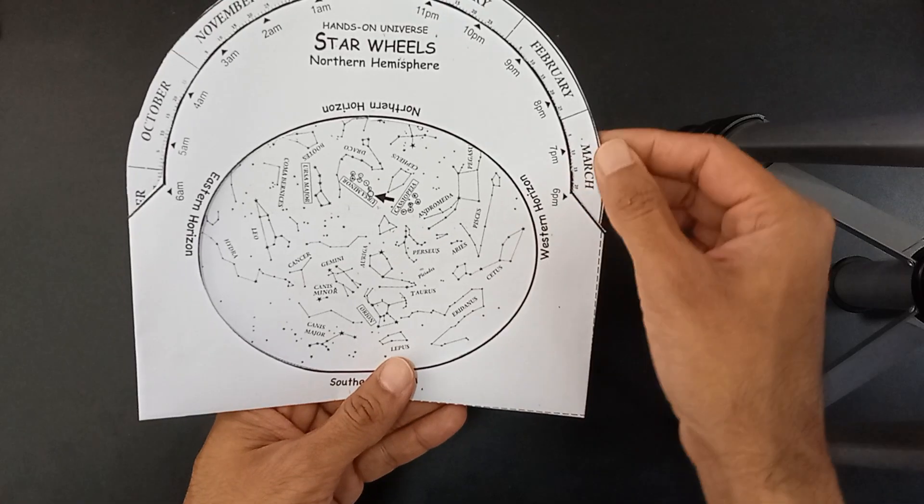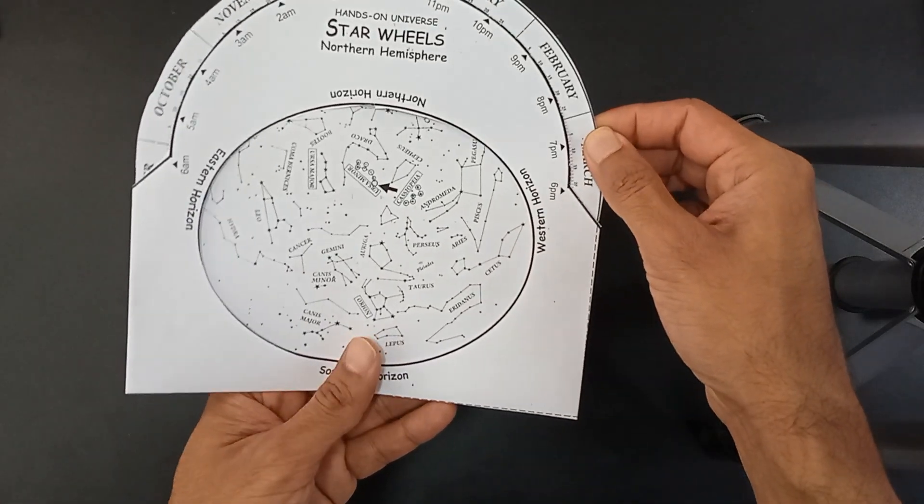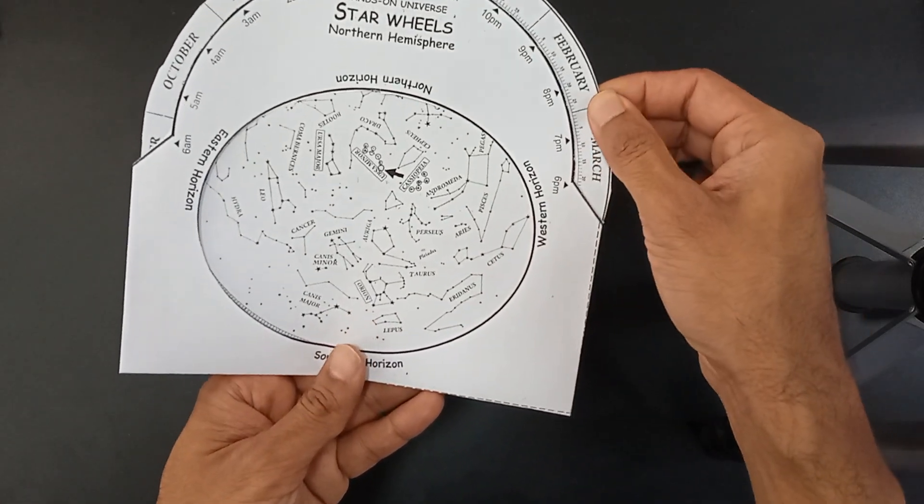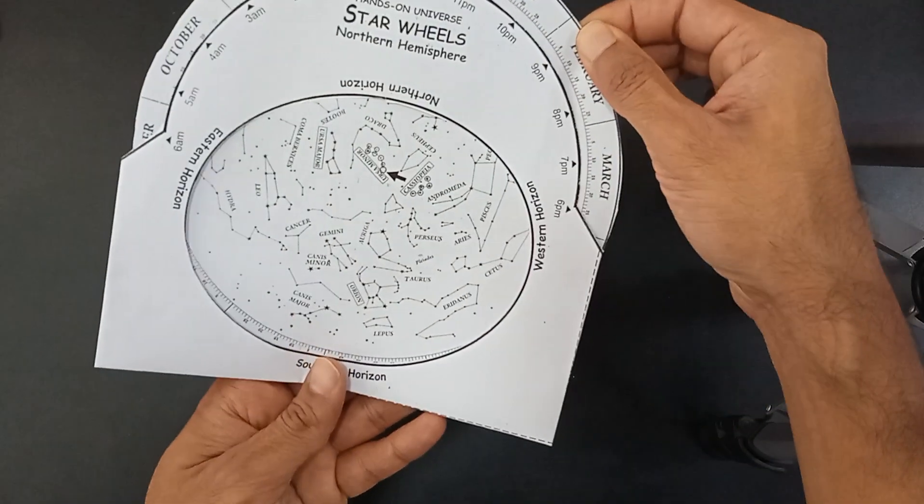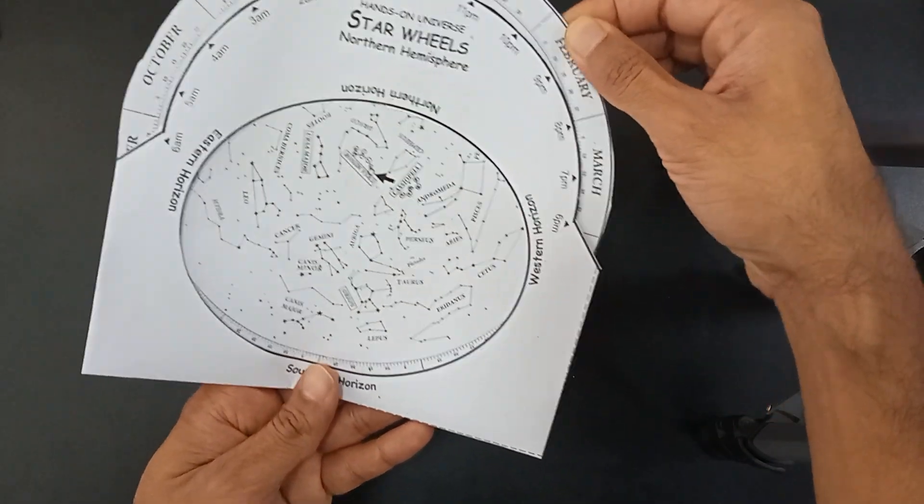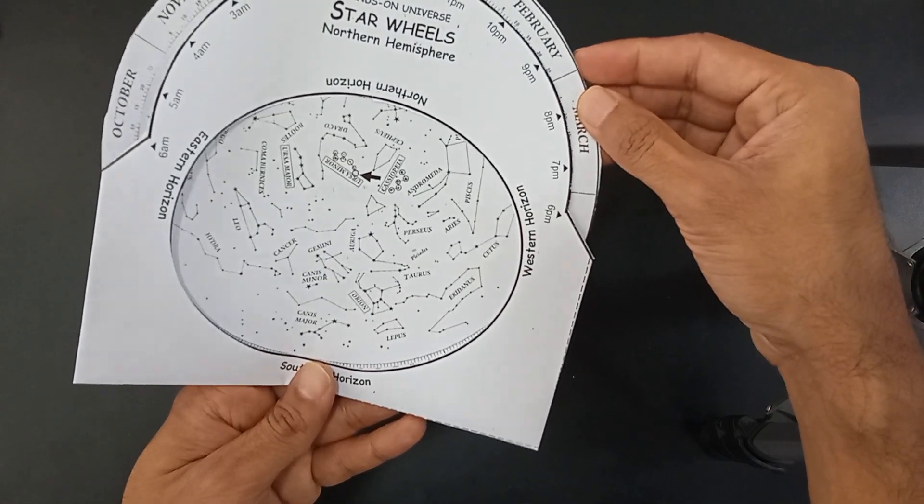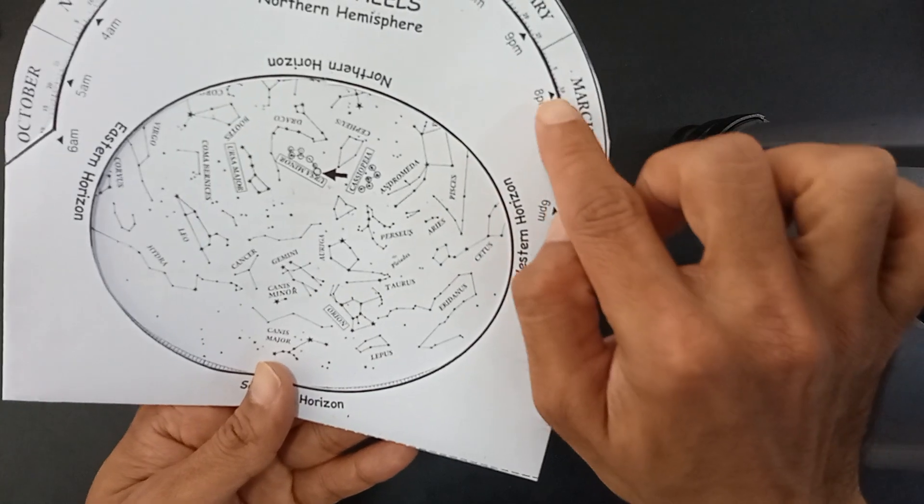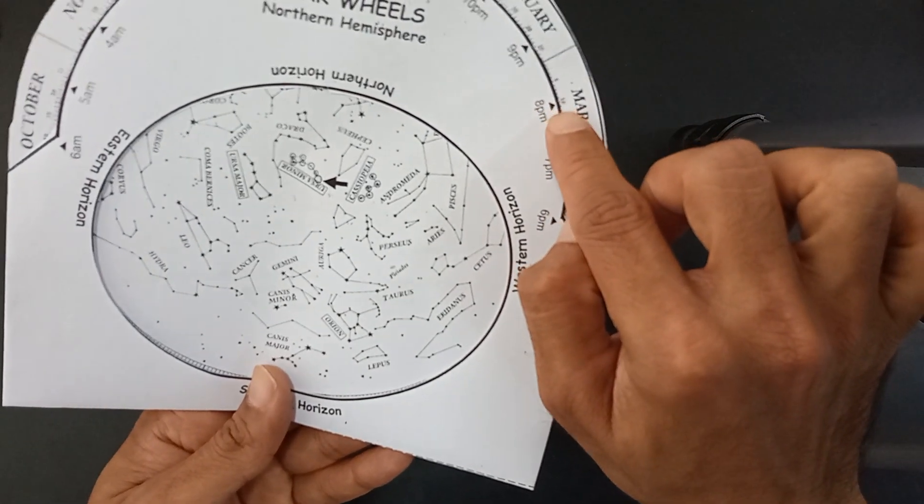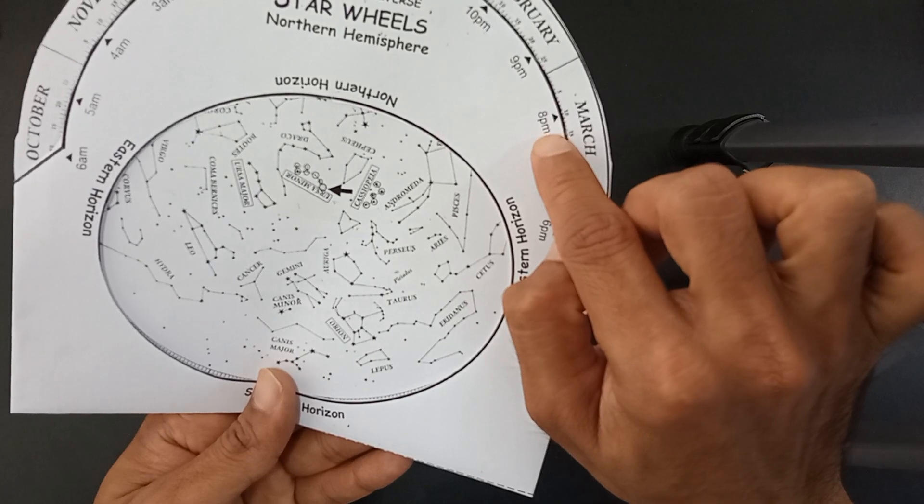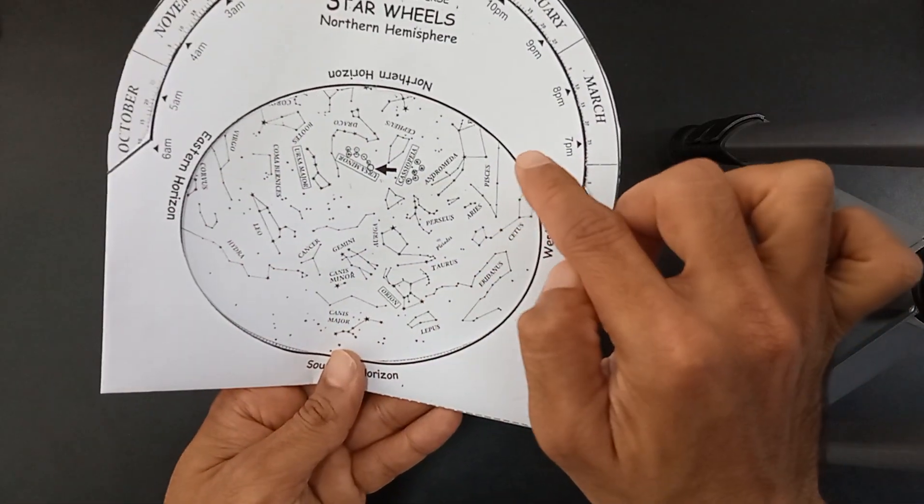Now suppose after one hour, you need to see how it would look like after one hour. So just slide it, rotate it anti-clockwise to put 8pm at 10th March. So I have placed 8pm on 10th March, 10th date, 8pm. So this is how your sky will look like.